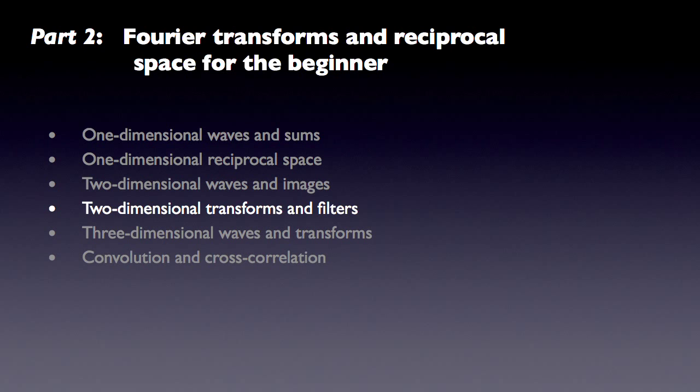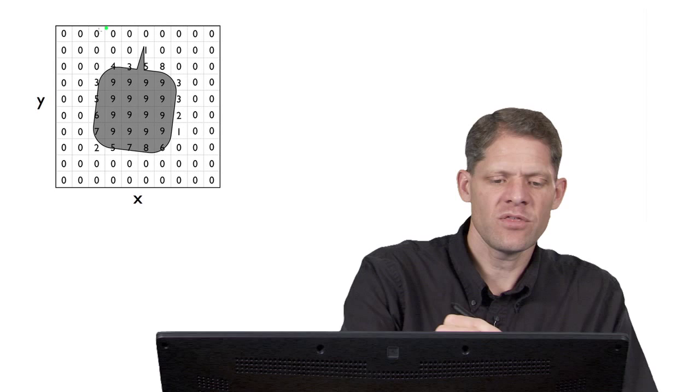Now that we understand that a two-dimensional Fourier transform is a decomposition of an image into its component sine waves, let's look at how that transform could be represented in another image. Let's begin here with an imaginary image of just some simple object that I drew.